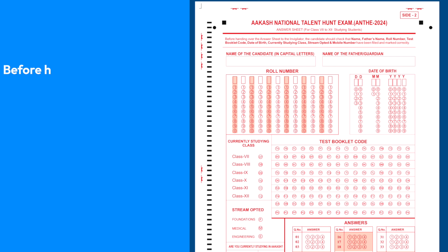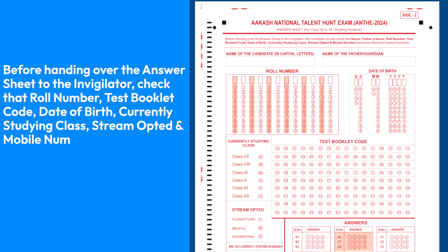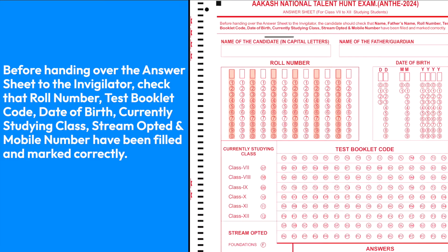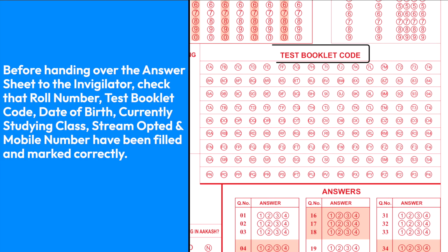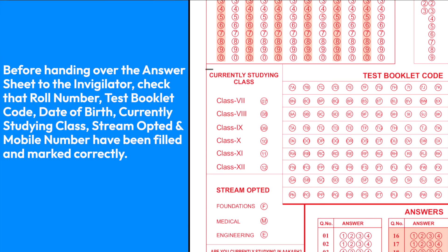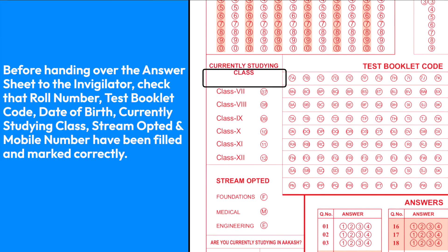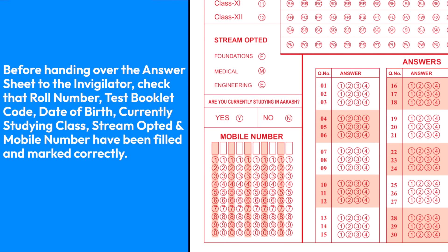Before handing over the answer sheet to the invigilator, check that the roll number, test booklet code, date of birth, currently studying class, stream opted, and mobile number have been filled and marked correctly.